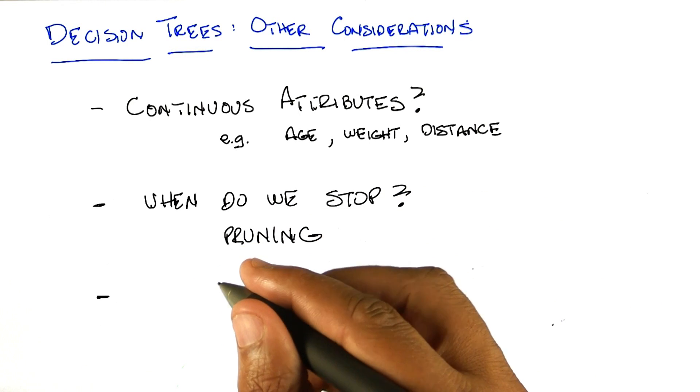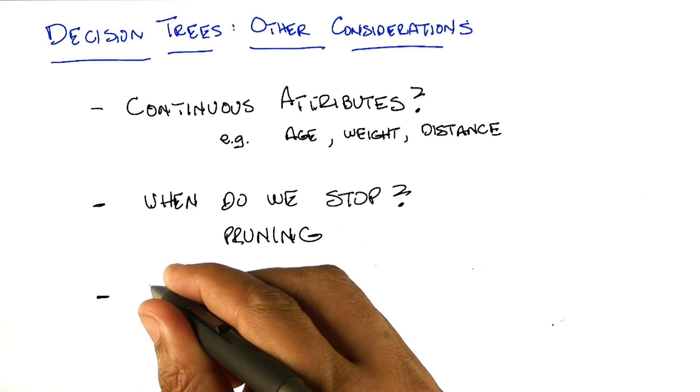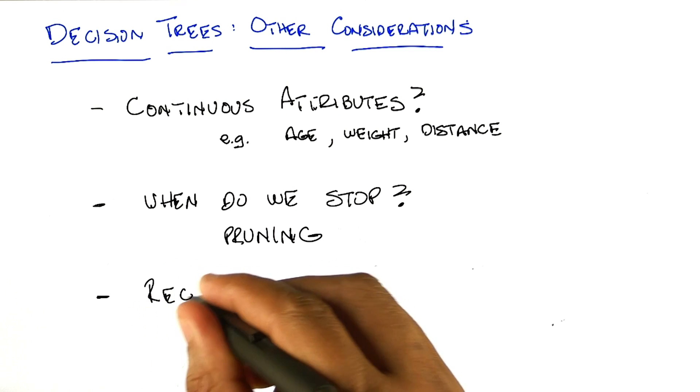Another consideration with decision trees, which we're not going to go into a lot of detail but is worth mentioning, is the problem of regression.